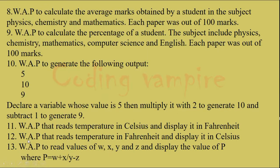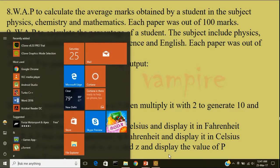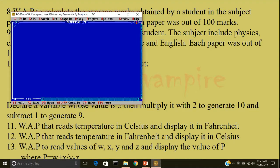The next question is 12. Write a program that reads temperature in Fahrenheit and display it in Celsius. I'll write down the formula. The formula is similar to the previous program. But you have to shift the variables. c is equal to 5 multiplied with f minus 32 by 9.